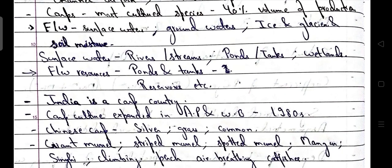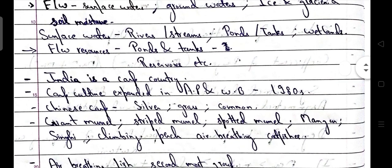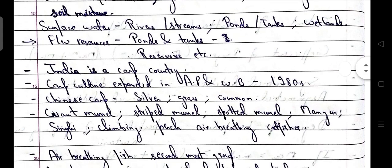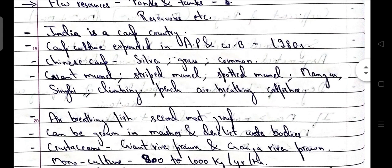Fresh water includes surface waters, ground waters, ice and glaciers, and soil moisture. Surface water includes rivers and streams, ponds, tanks, wetlands, etc. India is a carp country — that is, IMC are found here, contributing 40% of the total volume of production. IMC includes rohu, katla, and mrigal.